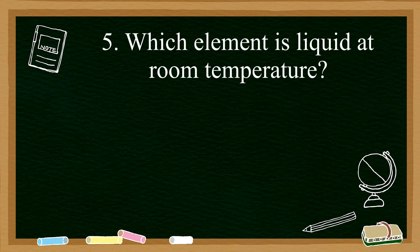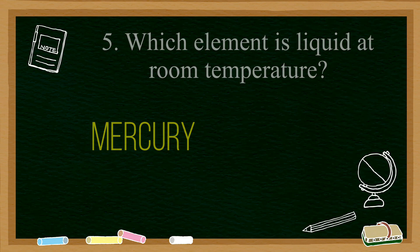Number five: which element is liquid at room temperature? The correct answer to this question would be the element mercury. Mercury is a poisonous metal which shouldn't be consumed by any living being, but it is liquid at room temperature.